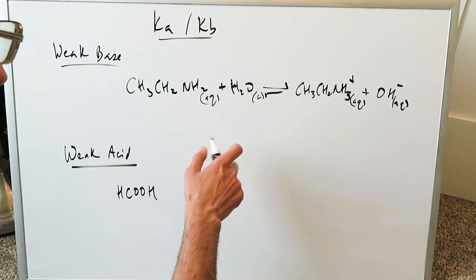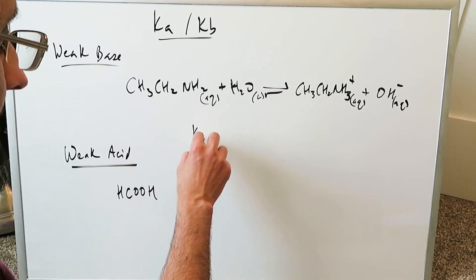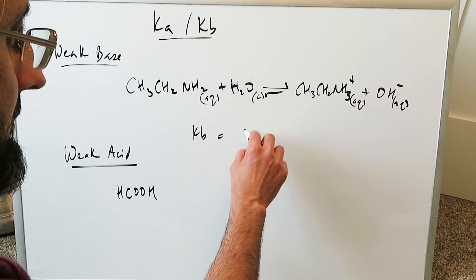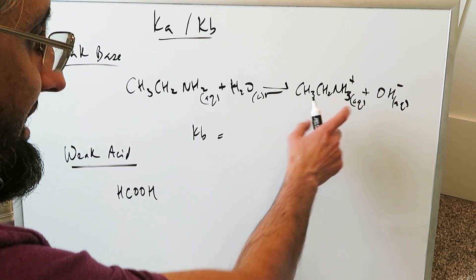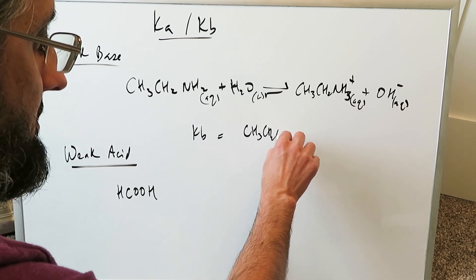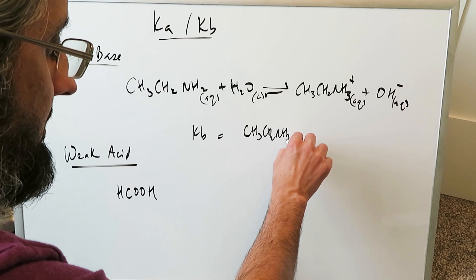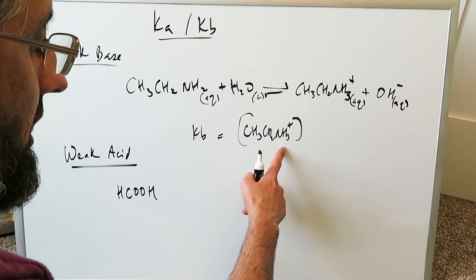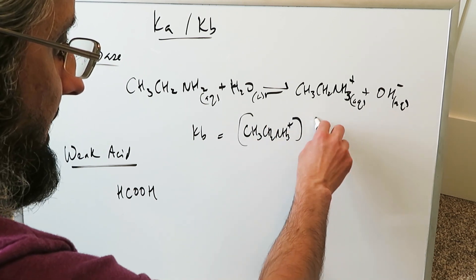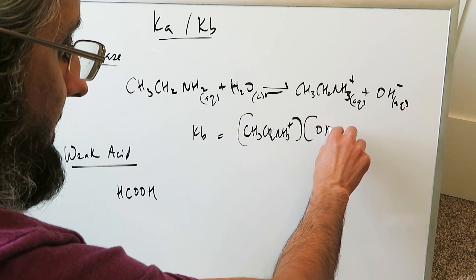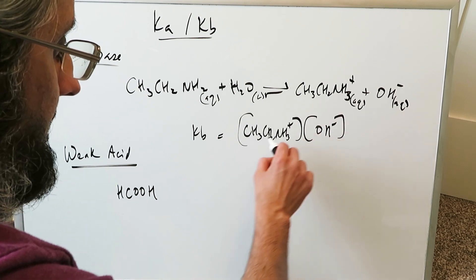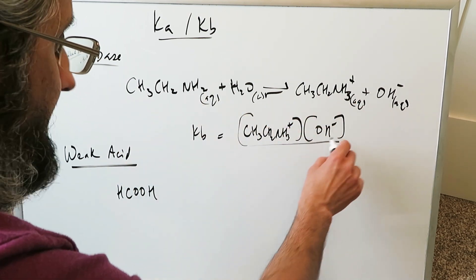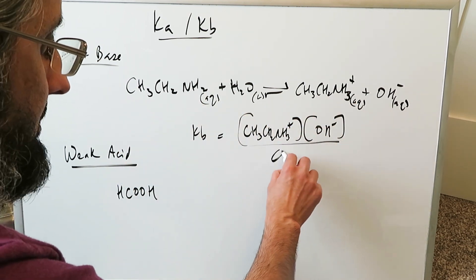Since you're looking at a weak base, you're looking at a KB — a base dissociation constant — and it would be equal to the concentration of CH3CH2NH3+ (your conjugate acid) times your conjugate base, divided by that base. Here you have a base giving rise to a conjugate acid and a conjugate base.